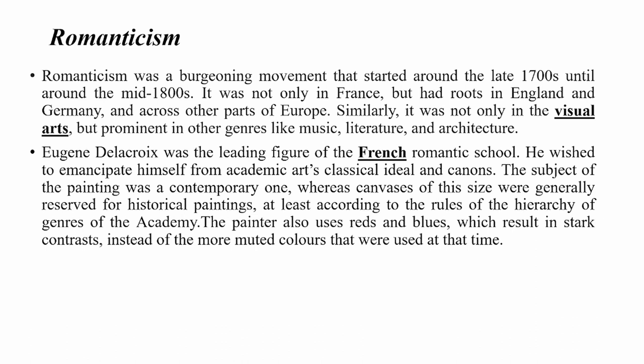Now, a few words on Romanticism. Romanticism was a flourishing movement that started around the late 1700s until around the mid-1800s. It was not only in France but had roots in England, Germany, and across other parts of Europe. It was prominent not only in the visual arts but in other genres like music, literature, and architecture. Eugène Delacroix was the leading figure of the French Romantic school.